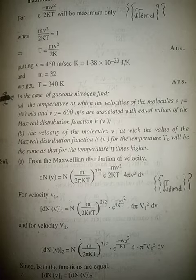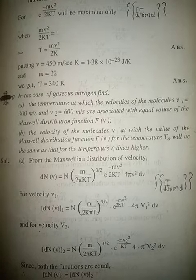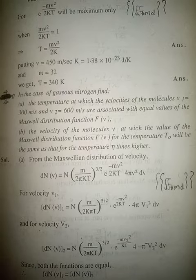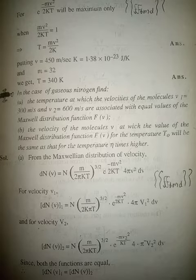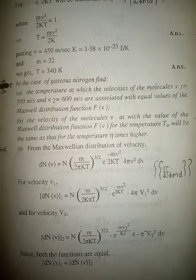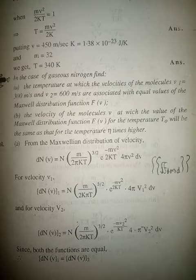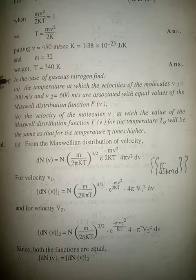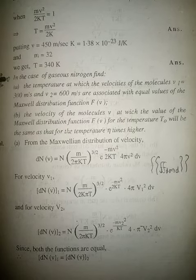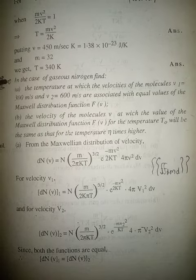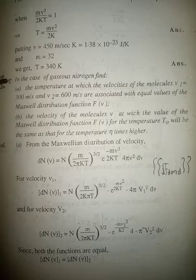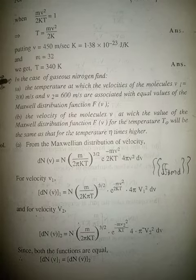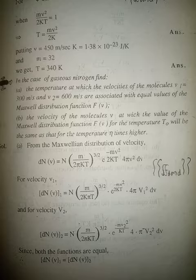...the velocities v₁ = 300 m/s and v₂ = 600 m/s are associated with equal values of the Maxwell distribution function f(v); and (b) the velocity v at which the value of the Maxwellian distribution function for temperature T₀ will be the same as that for a temperature η times higher.